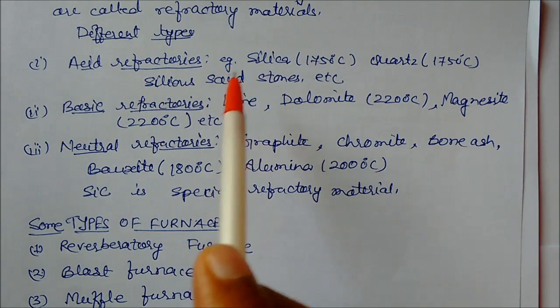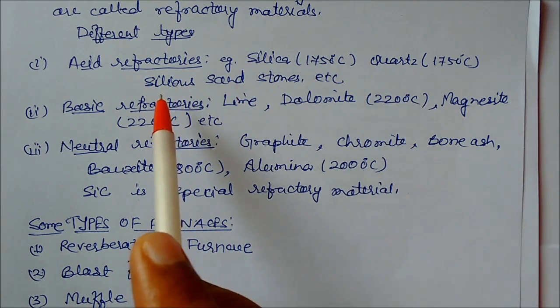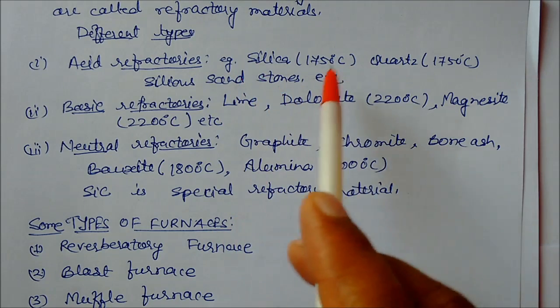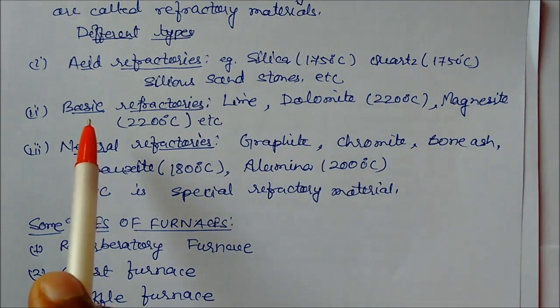We have three types: acid, basic, and neutral refractories. Acid refractories are normally silica, quartz, siliceous sandstone, etcetera. Some temperatures are mentioned here. Similarly for basic refractories.